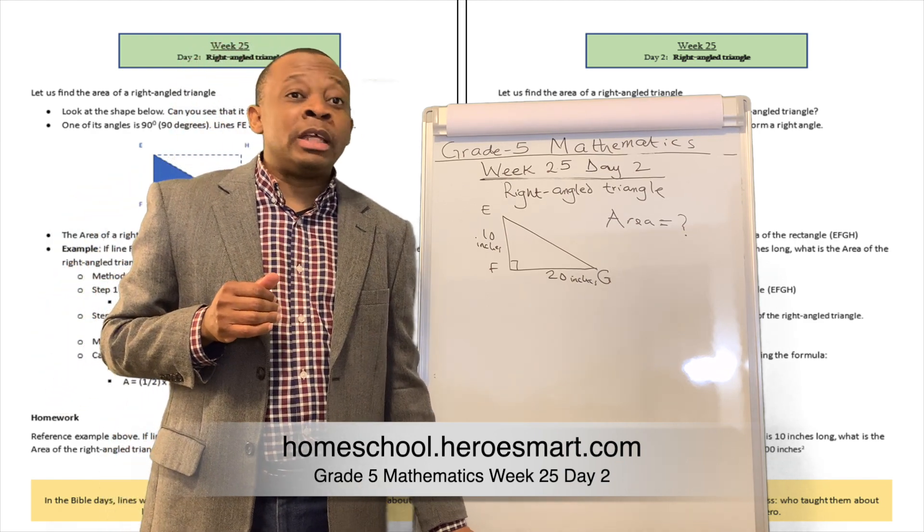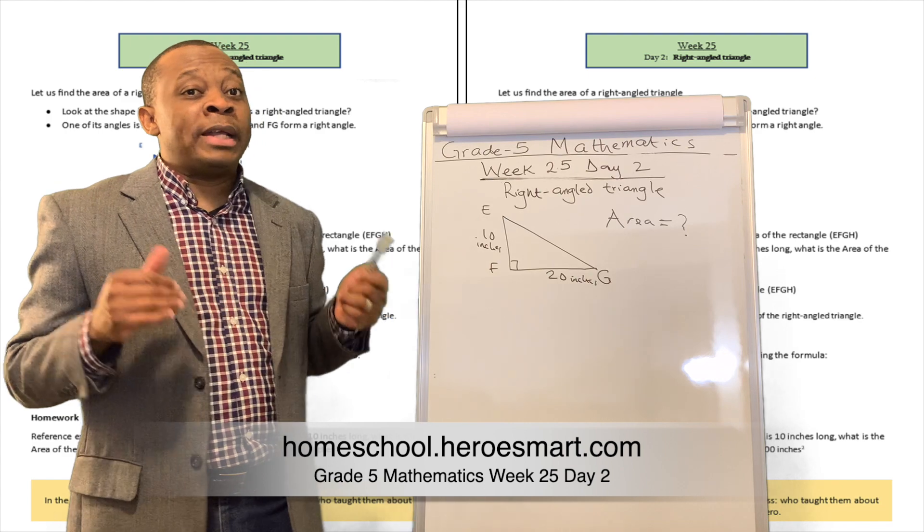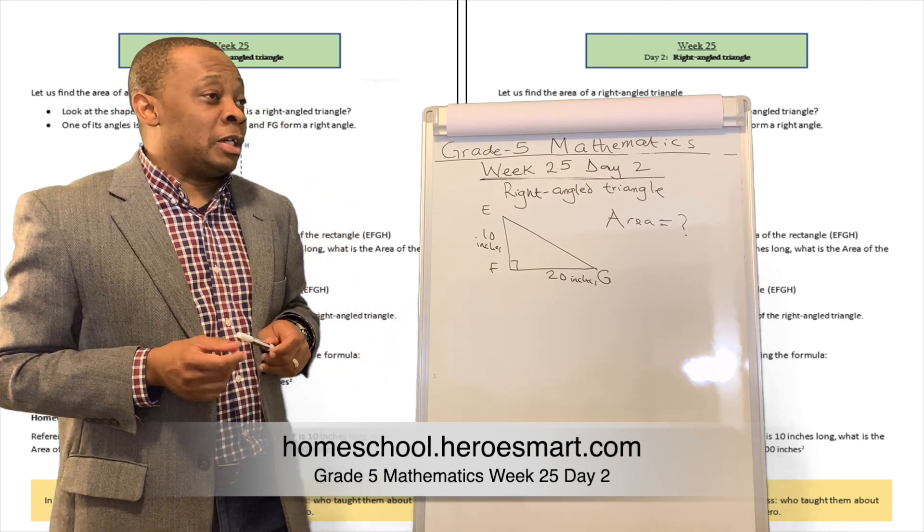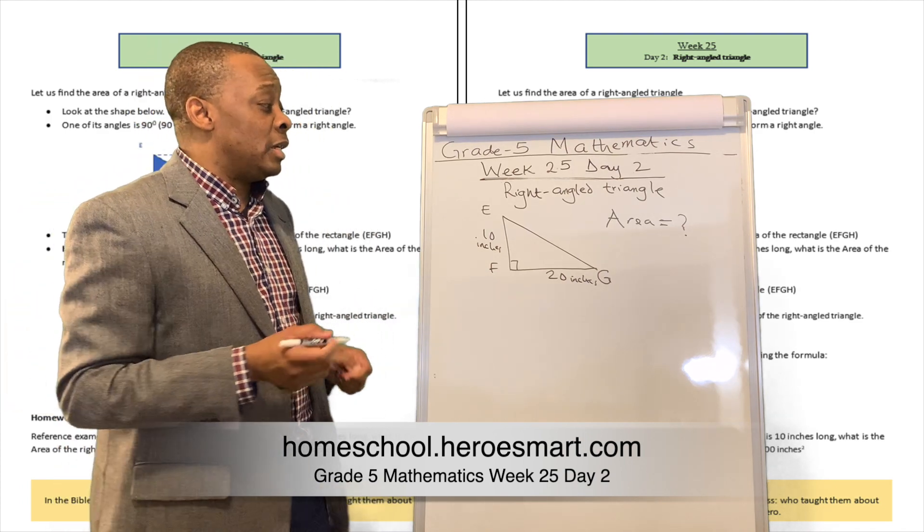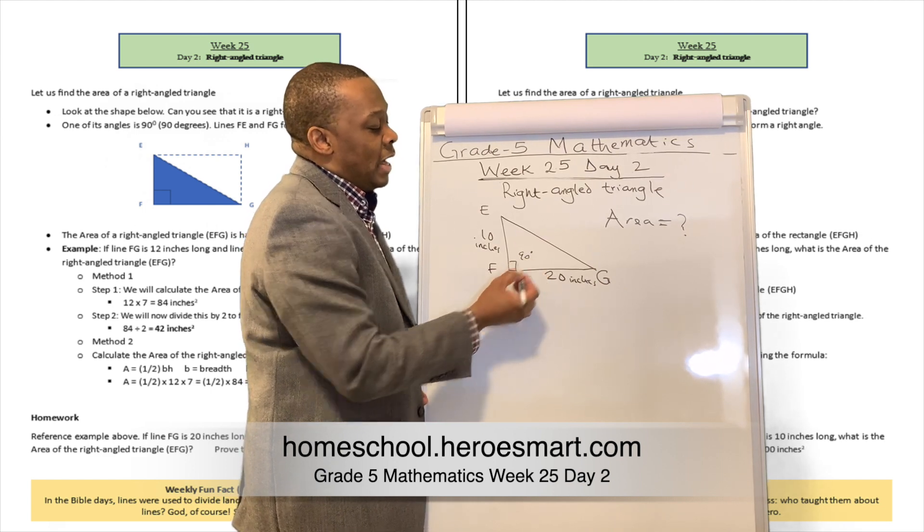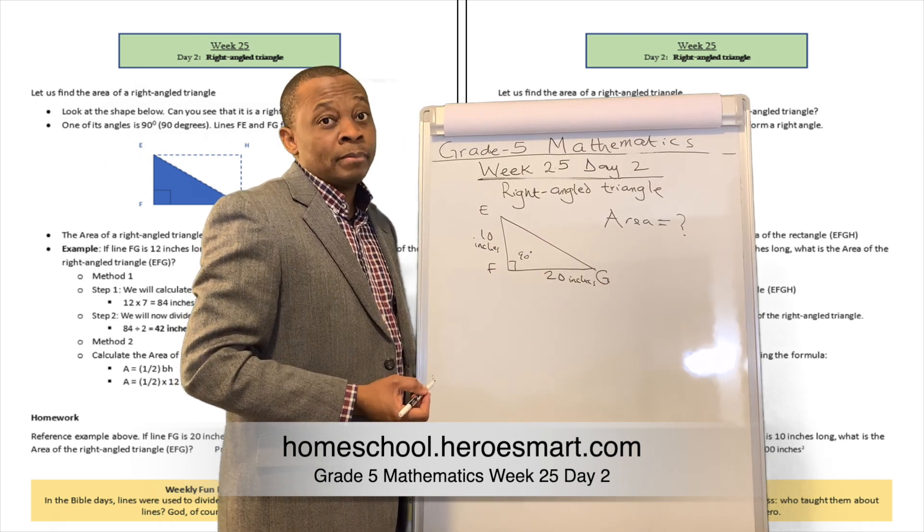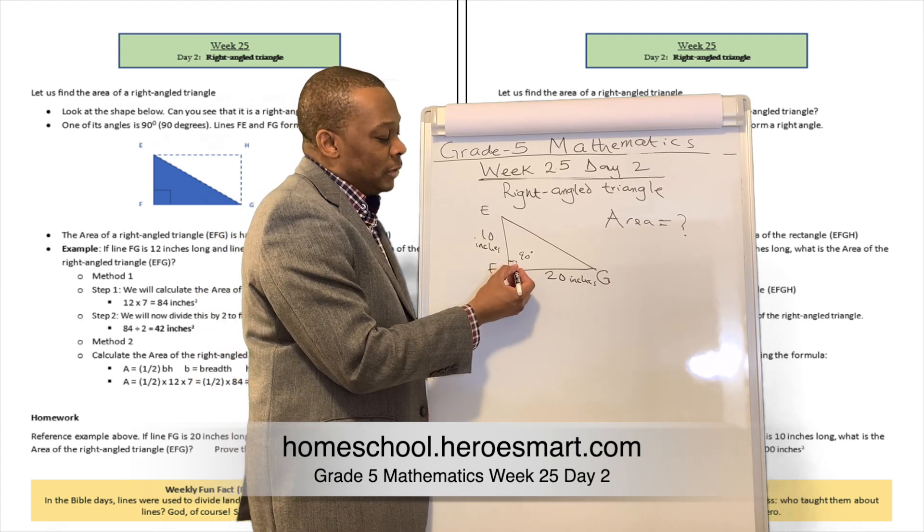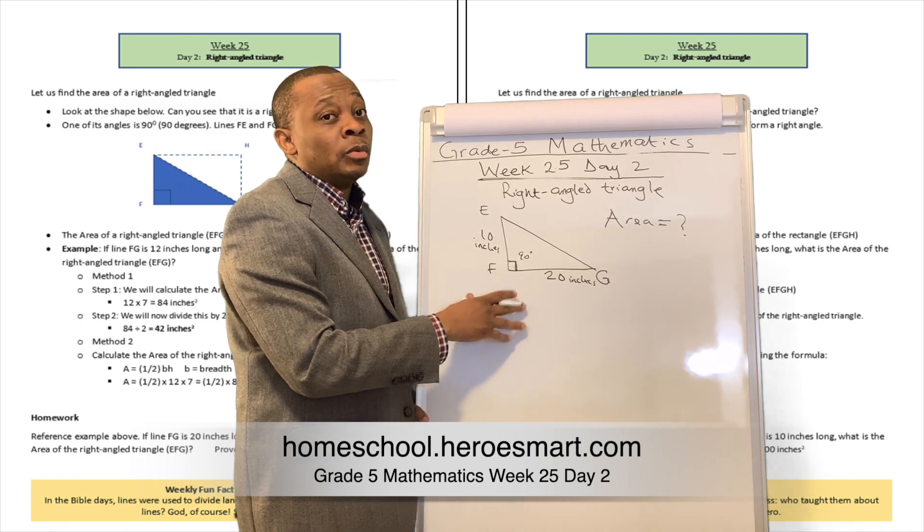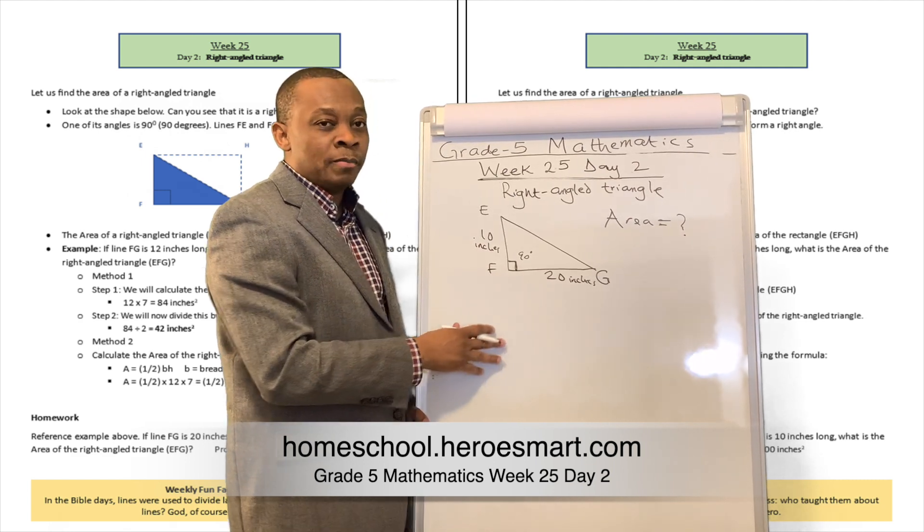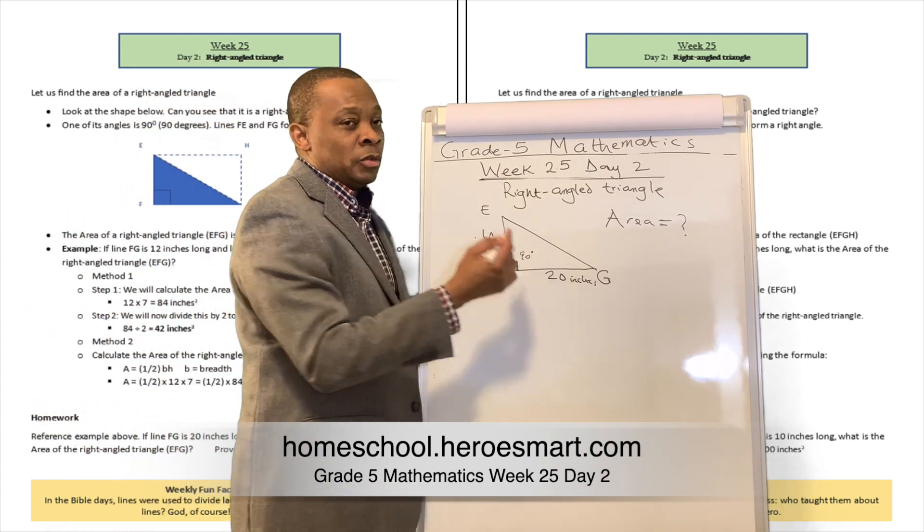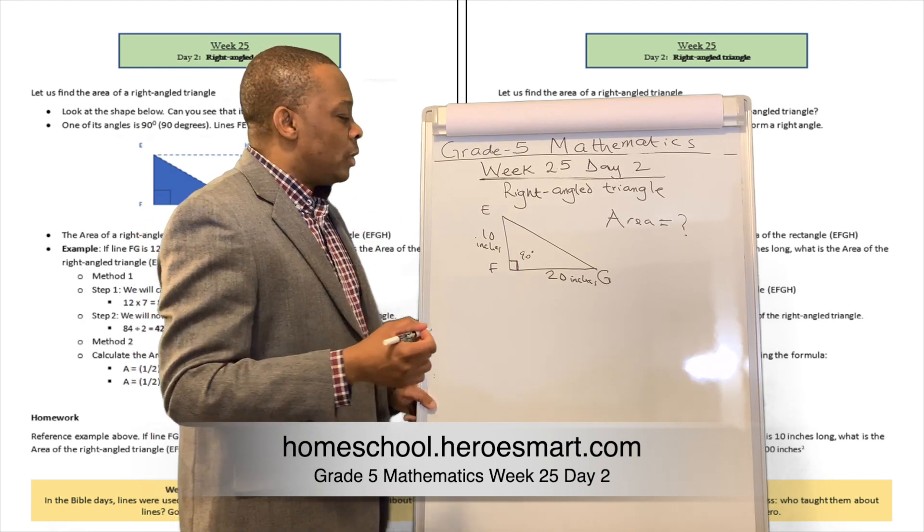Today we're going to be talking about how to calculate the area of a right-angled triangle. A few weeks ago we talked about a right-angled triangle being a triangle in which one of its angles will have 90 degrees in it. When that happens, they're going to put this symbol right over there to let us know which of the angles will have 90 degrees. Sometimes they may want to tell us to calculate the area of this right-angled triangle. How do we do that?